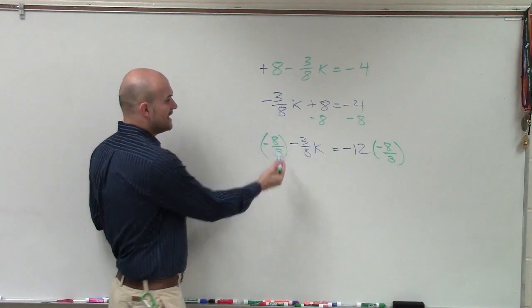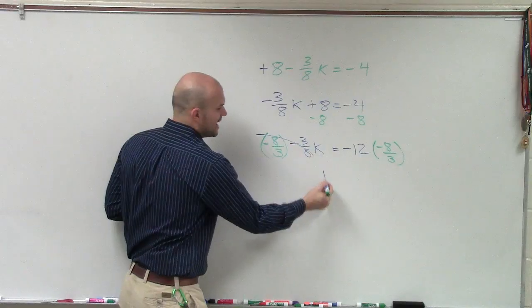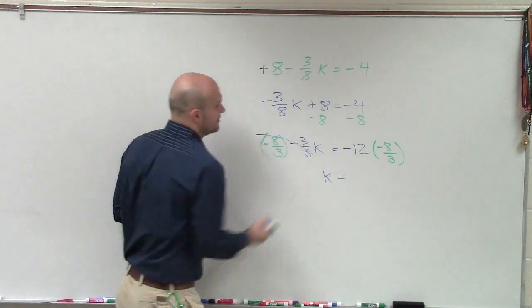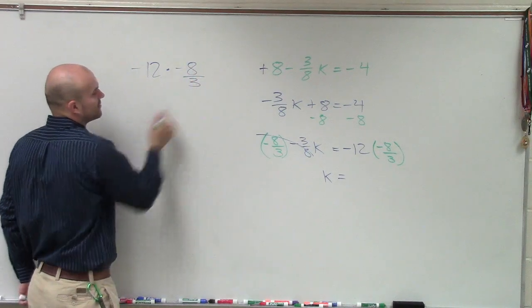So therefore, any number multiplied by its reciprocal, that multiplies to 1. 1 times k is just k. Now, we need to do negative 12 times negative 8 over 3.